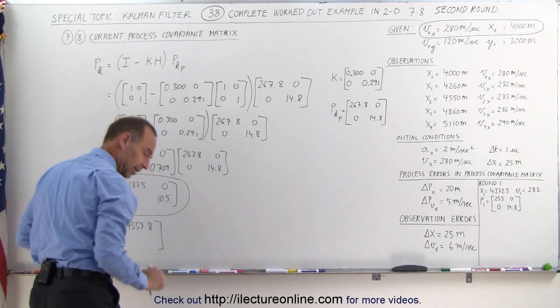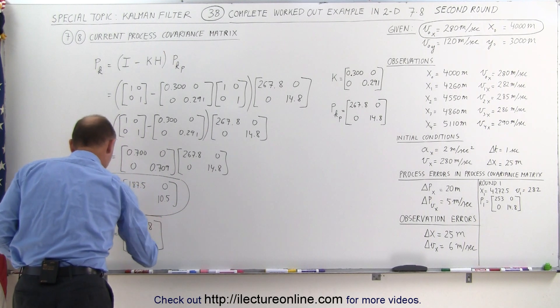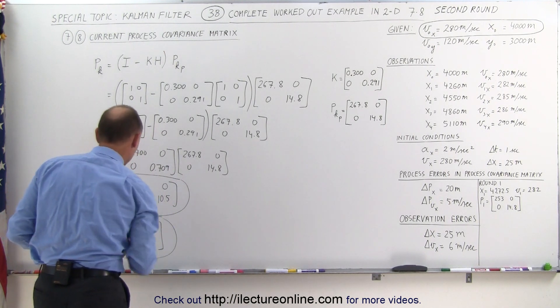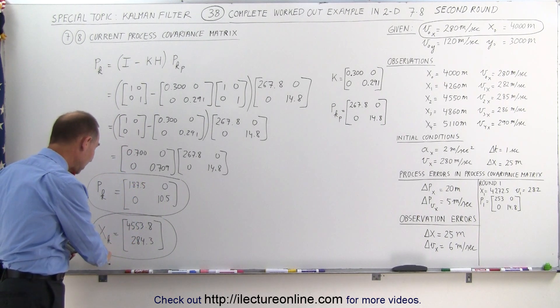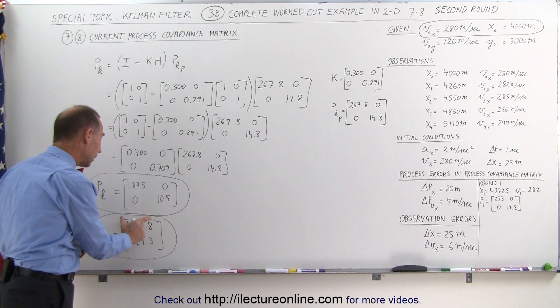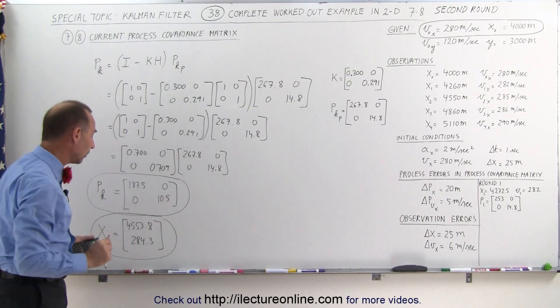4553.8, 284.3, we calculated that in the previous video, so now we have the current process covariance matrix, we have the current state matrix, with the new, most accurate, obtainable values for the position and the velocity of the plane that we're tracking.